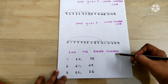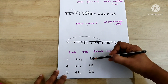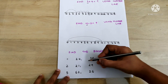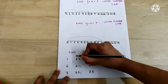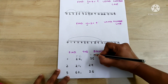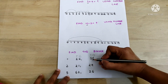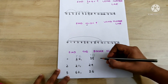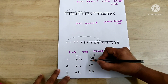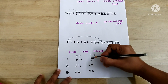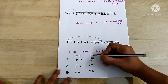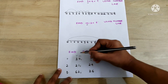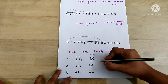Find the bigger number: 24 or 35. To compare two-digit numbers, first we have to look at the tens place. In 24, the tens place is 2. In 35, the tens place is 3. The number having more tens will be the bigger number. Here there are 3 tens and only 2 tens, so 35 is the bigger number.